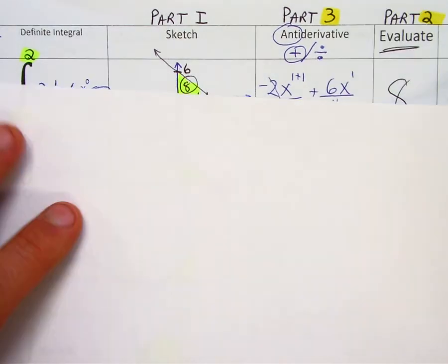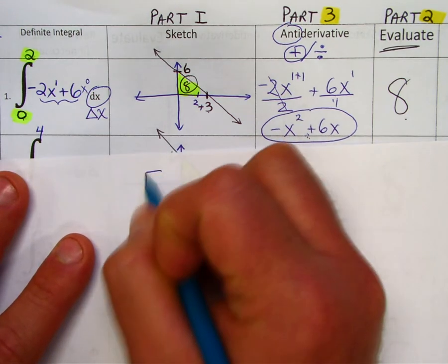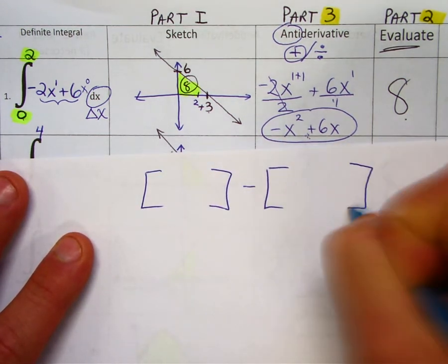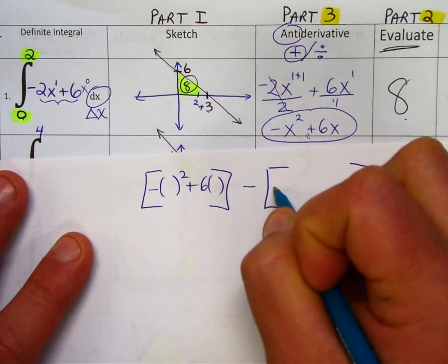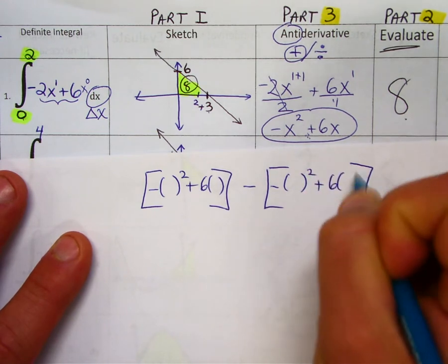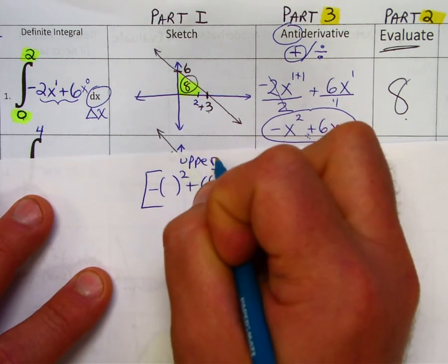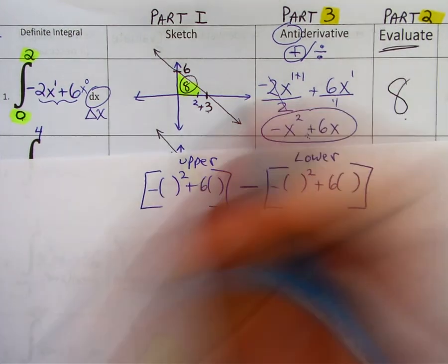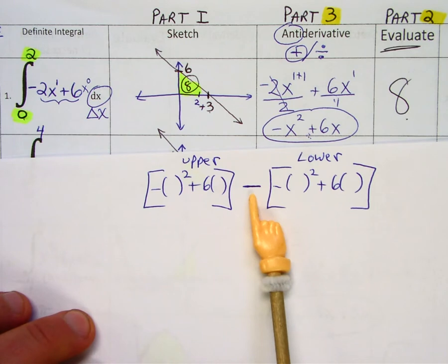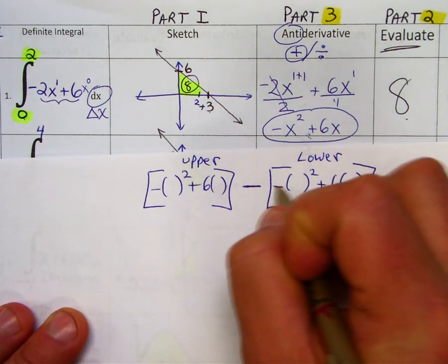Now what you do is you simply take the antiderivative. Notice I'm rewriting the function twice. I'm just writing the skeleton here. You're going to plug in the upper bound. And you're going to subtract it from the lower bound. And you always subtract, no matter what's in here. No matter what's in here, you're always going to subtract that. I always use brackets here to kind of separate the two things.